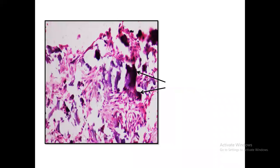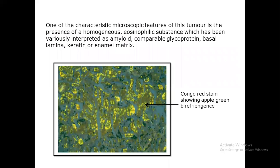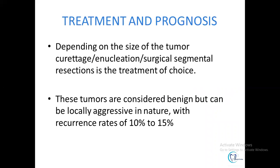In certain areas, scattered dystrophic calcifications can also be appreciated. The characteristic microscopic feature is the presence of eosinophilic substance, which is interpreted variously as amyloid, glycoprotein, basal amyloid, or enamel matrix. Special stains such as Congo red can be performed to detect amyloid — if present, it will show apple-green birefringence under a polarizing microscope.